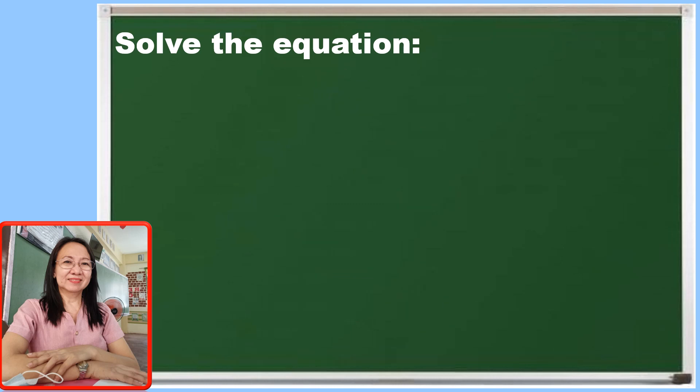Have you observed the process in solving the equation? Let us continue with our number 2 example. The given is the square root of x minus 3 is equal to 6. The equation is properly arranged.